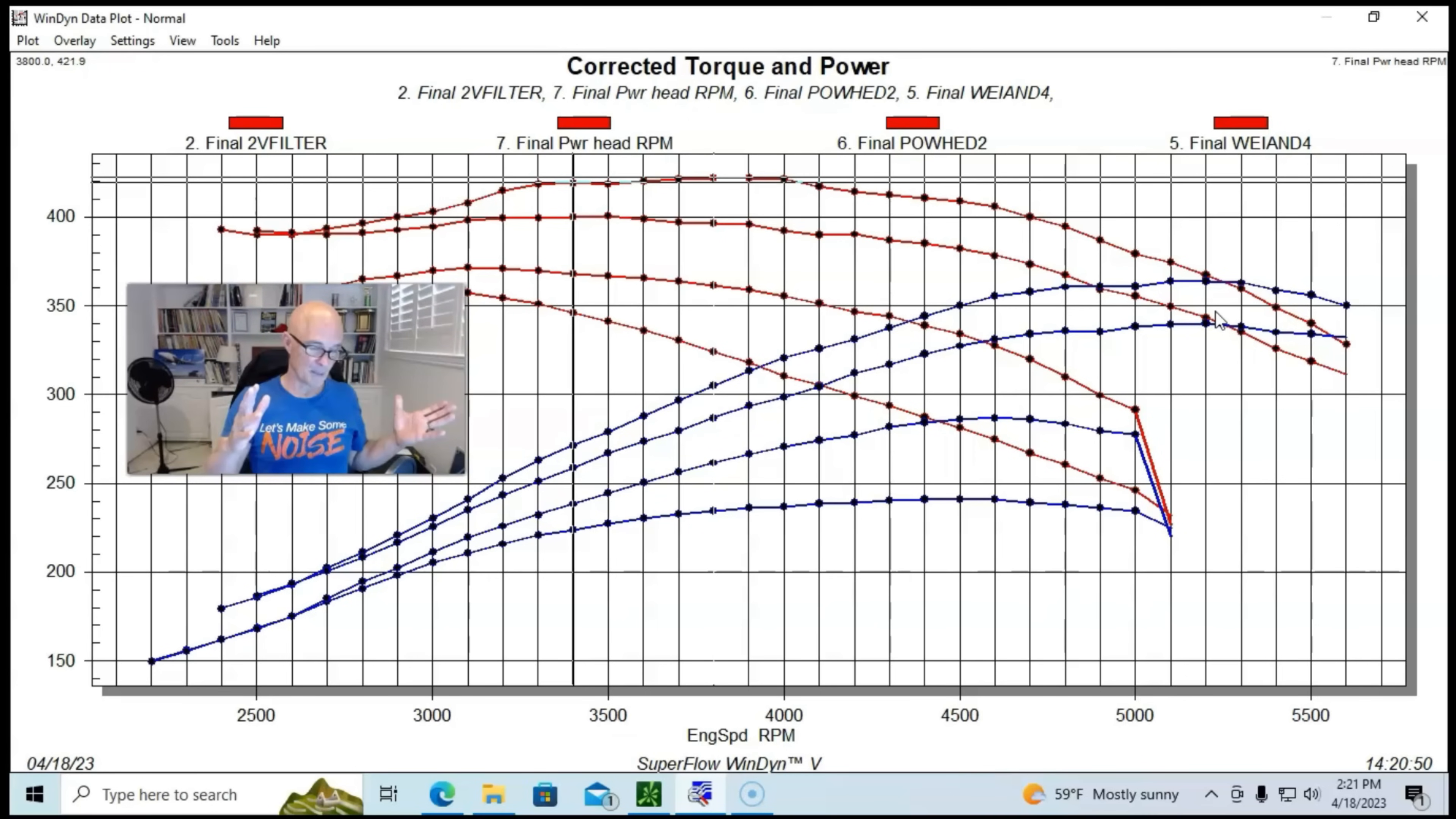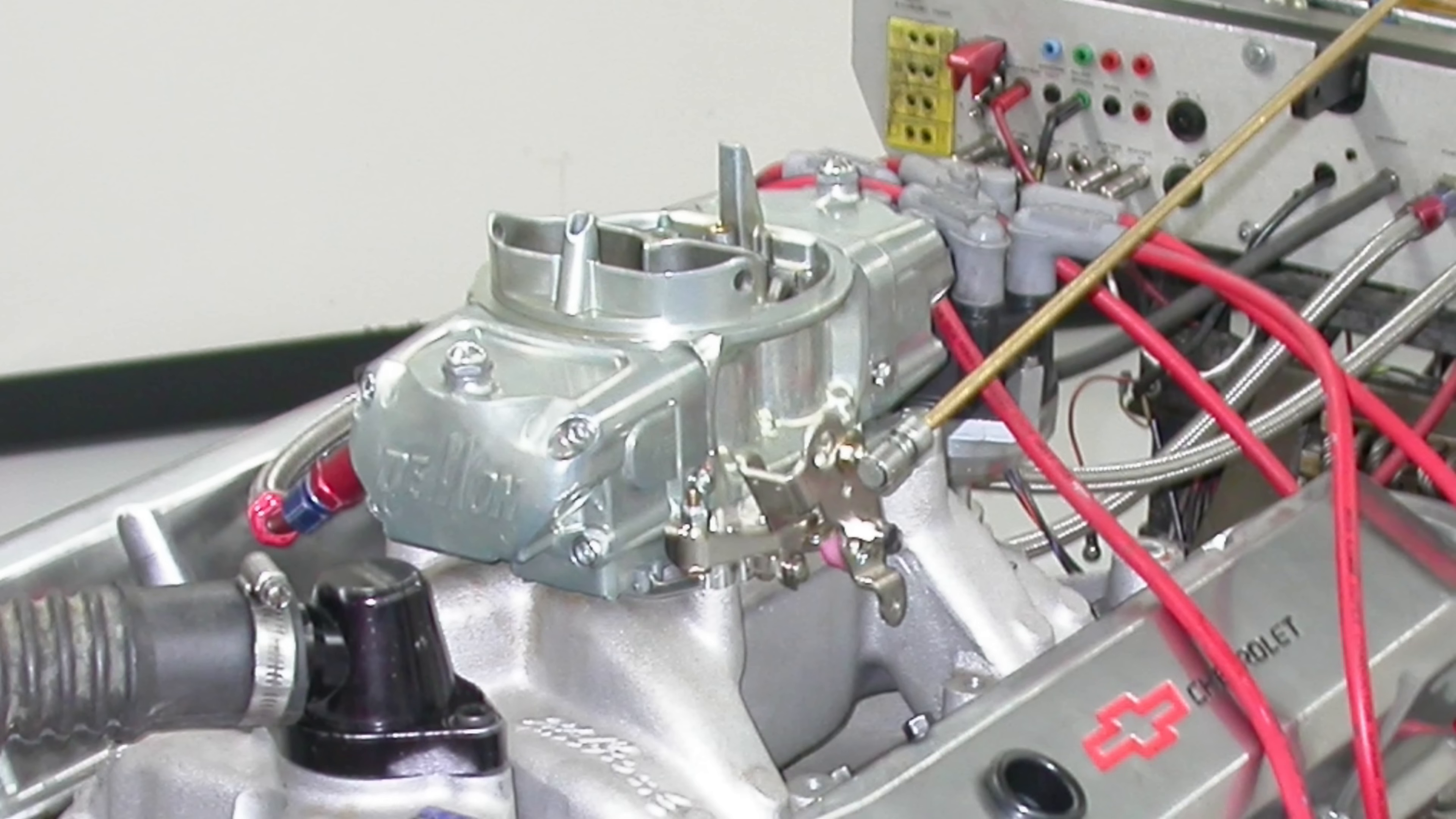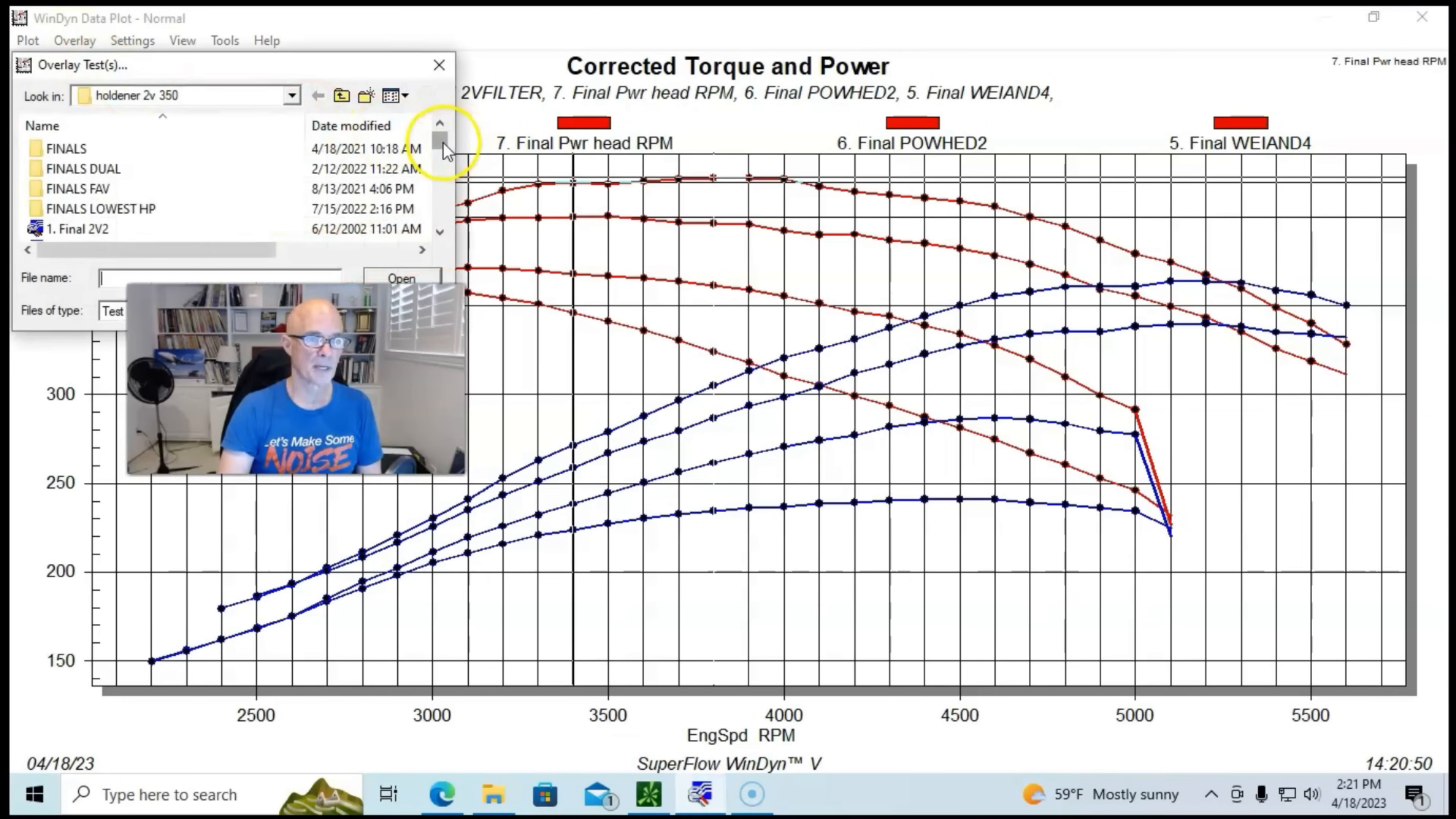If you're thinking about a carburetor, you could either keep the Q-jet or step up to one of the performance ones like Holley or the newer Edelbrock that they have out now. Again, that's all up to you - I think that they would work equally well.